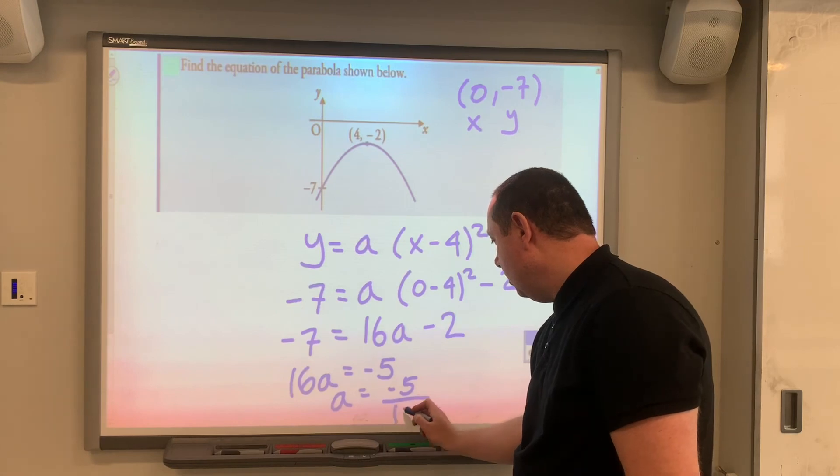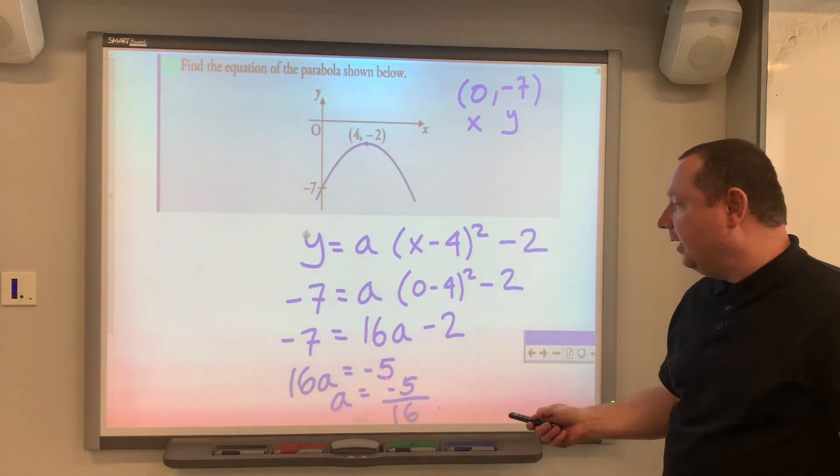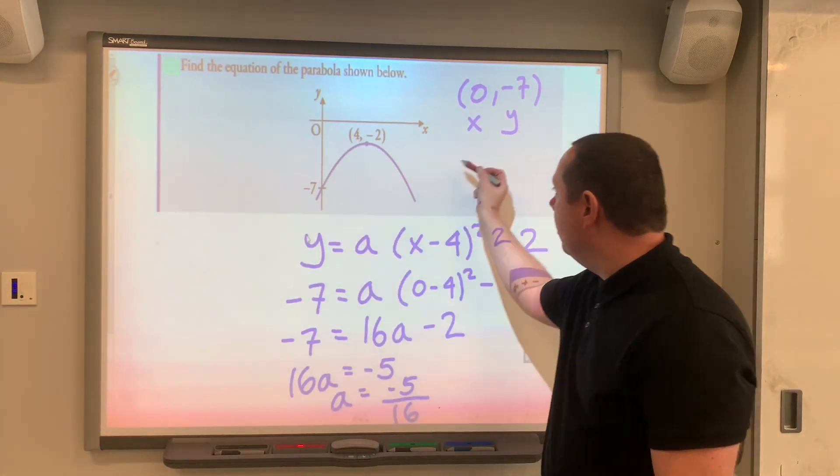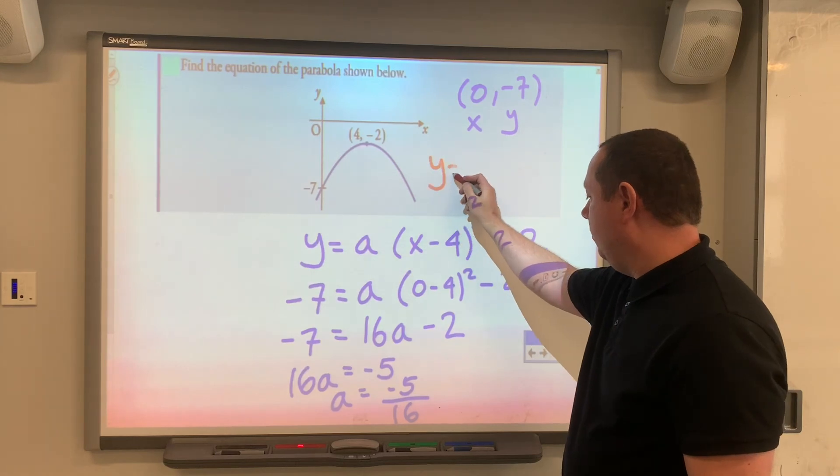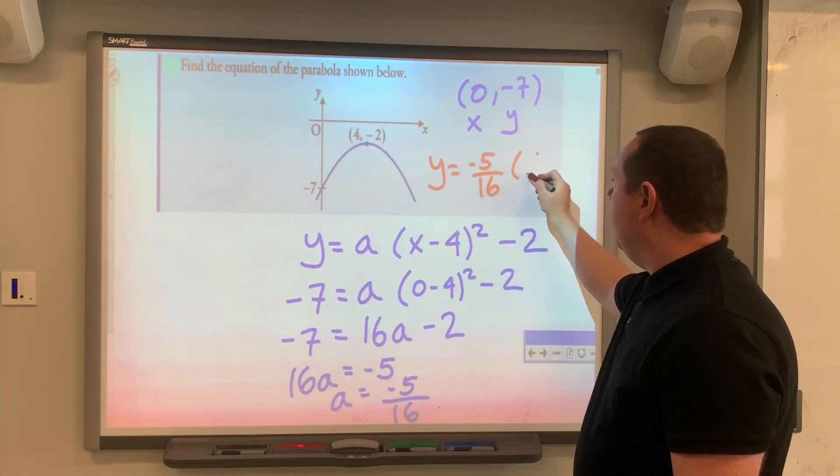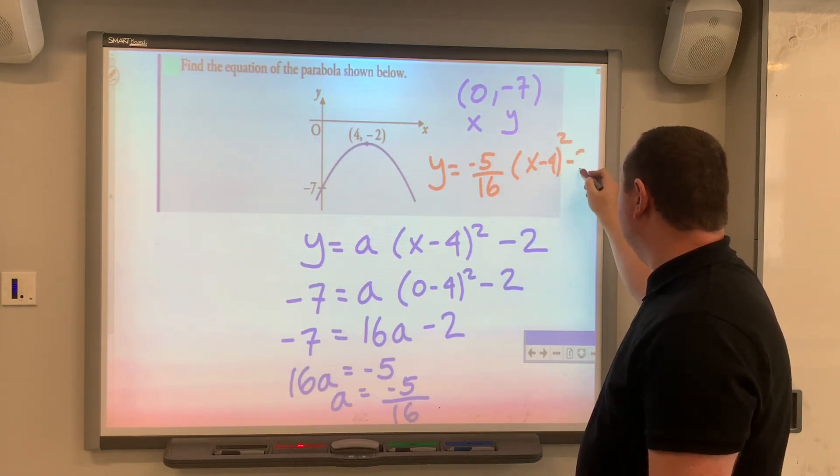Which is what we would expect in terms of the sign, because it's negative it's upside down. So the final answer, which we'll write in red up here, is y equals -5/16(x minus 4) squared minus 2, and we're done.